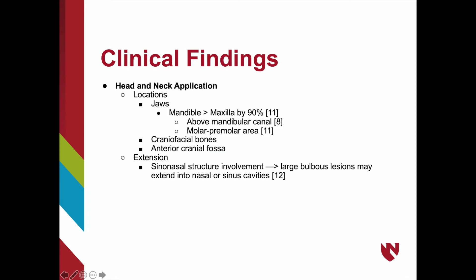When found in the jaw, ossifying fibromas occur in the mandible 90% of the time compared to the maxilla, and are typically found in the molar-premolar area above the mandibular canal. As these lesions expand, depending on their location, they can impinge on surrounding structures. For example, if the sinonasal structure is involved, growth can cause extension into the nasal or sinus cavities.